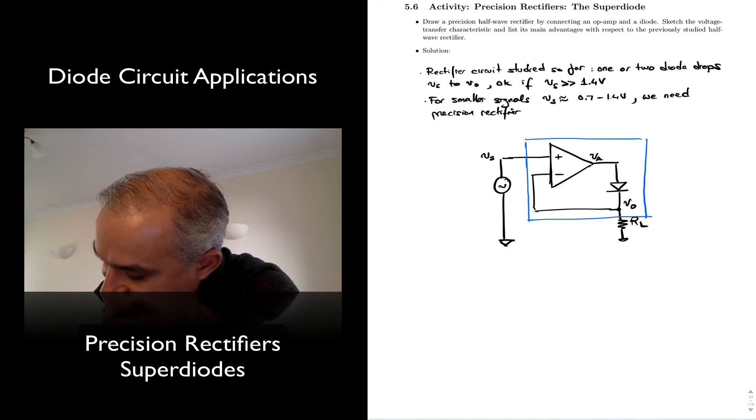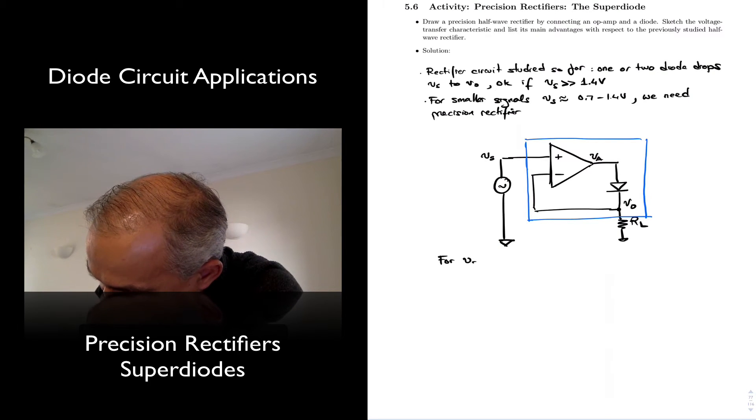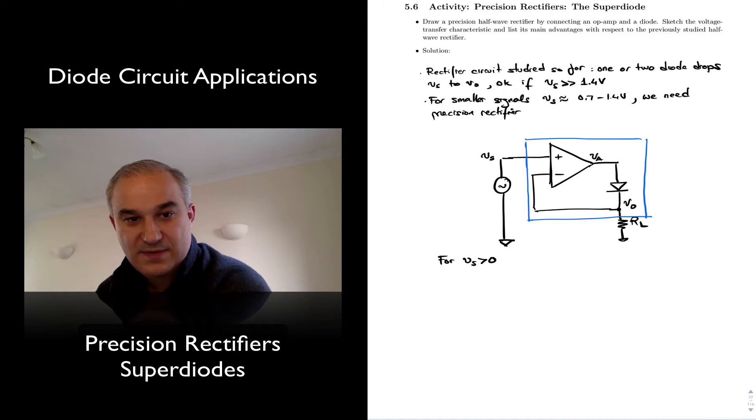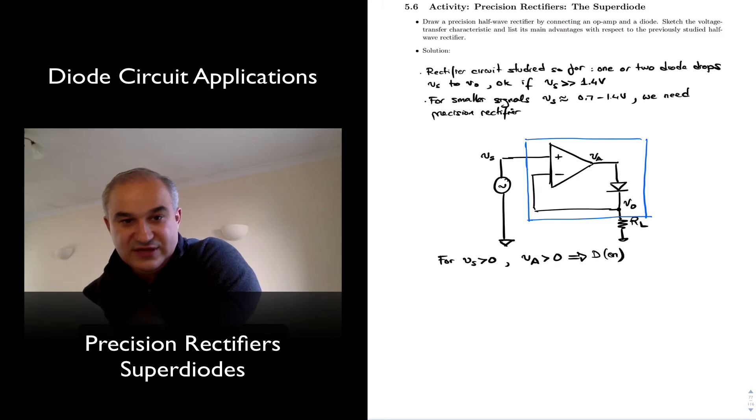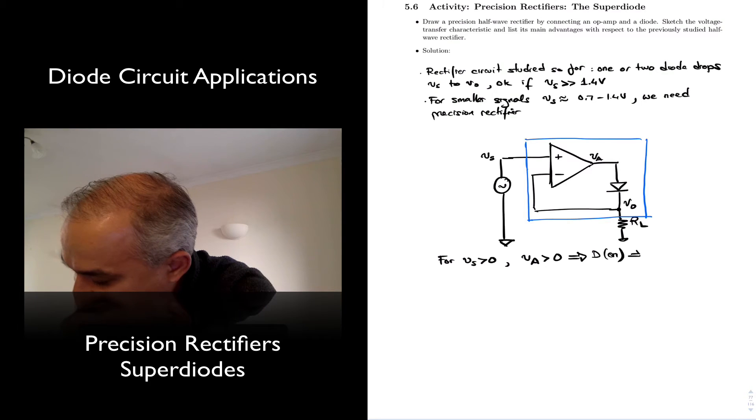For positive values of Vs, for Vs greater than zero, what do we have? VA is greater than zero, which implies that the diode is on. Think of it as, and we have negative feedback.